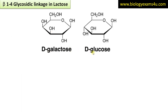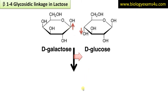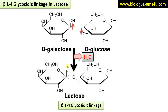Now let us see what is beta 1,4 glycosidic linkage. This is D-galactose and this is D-glucose. Here you can see the OH group of the first anomeric carbon is above the plane of the glucose ring.